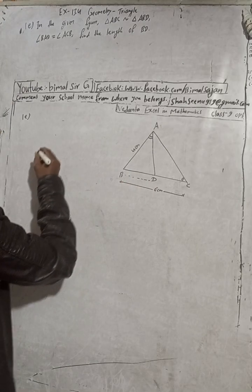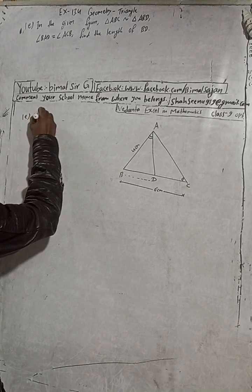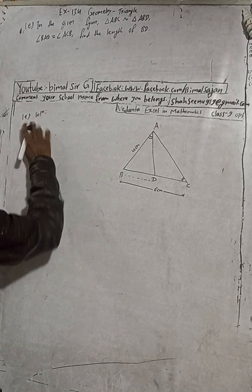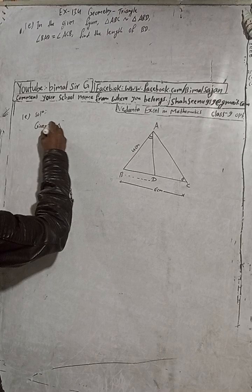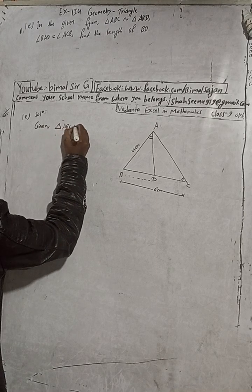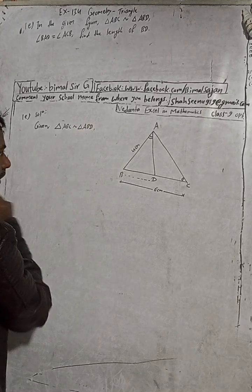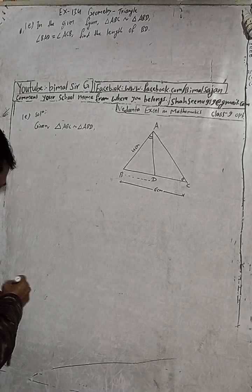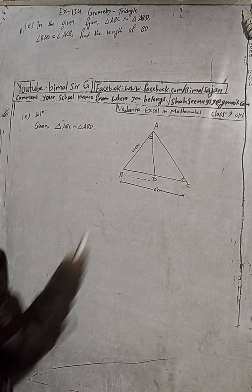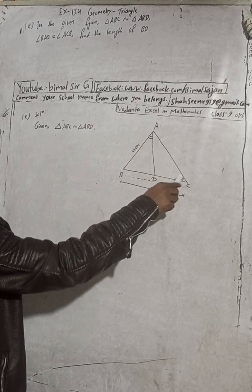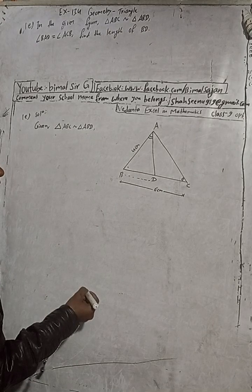Given that triangle ABC is similar to triangle ABD. Now we should understand which angle is equal to which among these. There is a common angle shared by both triangles — this is the common angle.